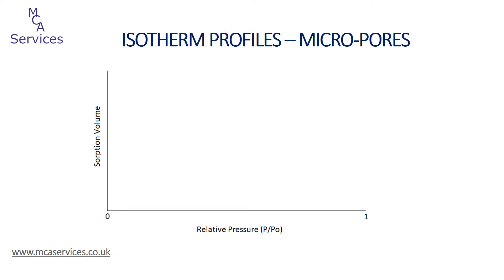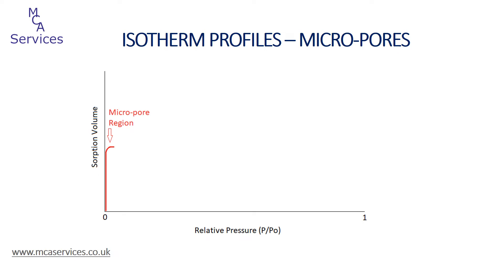We'll have a look at some of the different isotherm profiles that can form as adsorption proceeds, which depend on the porous features of the sample. This gives a really good picture of the range and complexity of possible isotherm profiles. As the adsorptive is introduced to the sample tube it will become adsorbed to the sample surface, and the first interaction will be with the micropores. Being less than two nanometers in diameter, these dimensions range from less than that of the size of an adsorbate atom or molecule to just a few times that.